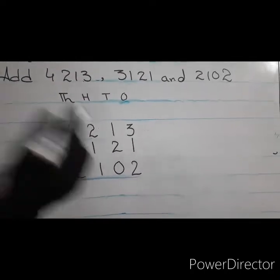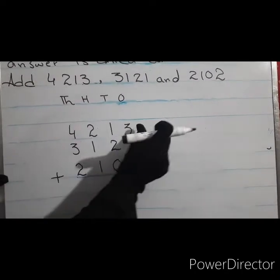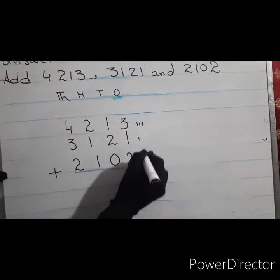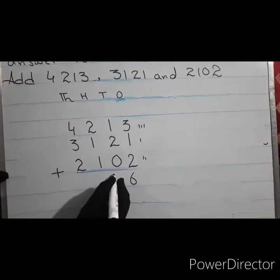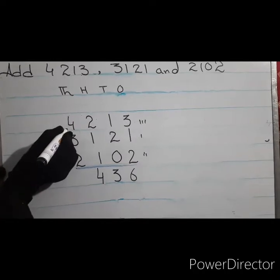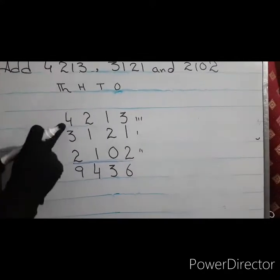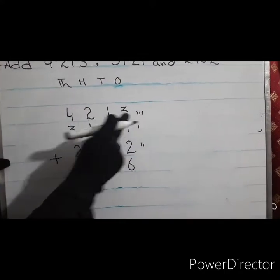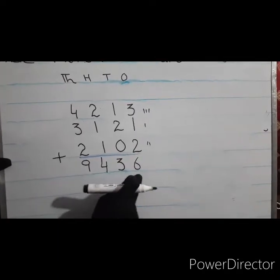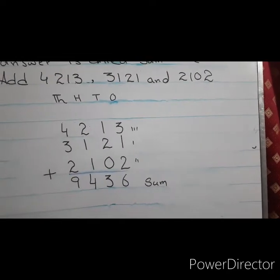We add these numbers to find the sum. In addition, we start from the right side — we add the ones values first. Three plus one plus two equals six. Then tens: two plus two plus one equals six. Then hundreds: two plus one plus one makes four. Then thousands: four plus three plus two equals nine. The sum is nine thousand four hundred thirty-six. The answer of addition is called sum.